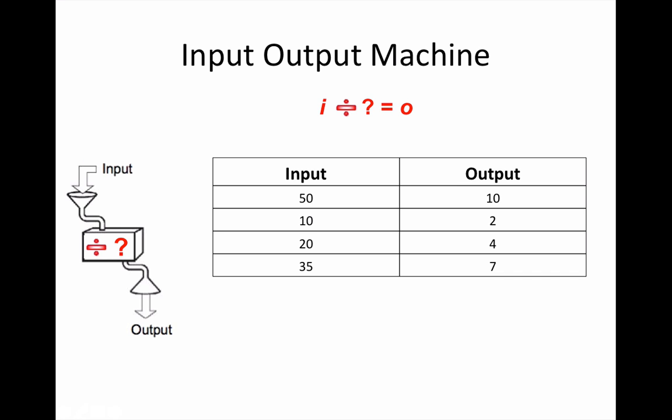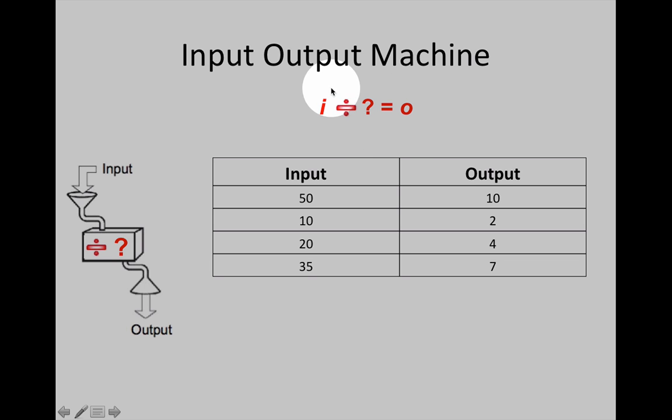Can you write a formula or expression for this table? It is a division machine. How much is the input being divided by each time to get the output number? Pause the video to try to complete the expression. Do this now.